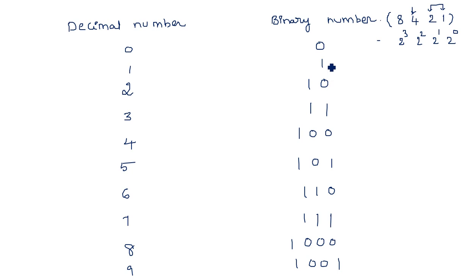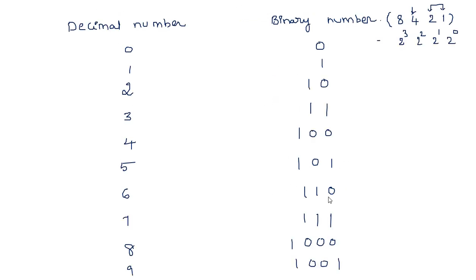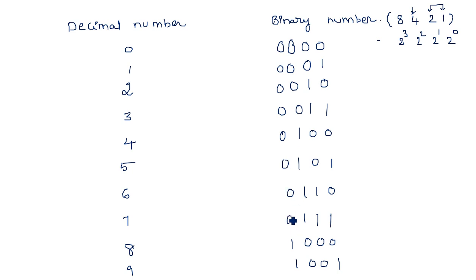If you observe this number system, the first digit of all these numbers is always alternating between 0 and 1: 0, 1, 0, 1, 0, 1... The second digit follows a pattern of 2 zeros followed by 2 ones: 0, 0, 1, 1, 0, 0, 1, 1. The third digit has 4 zeros followed by 4 ones. And the fourth digit has 8 zeros followed by 8 ones.